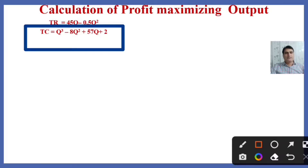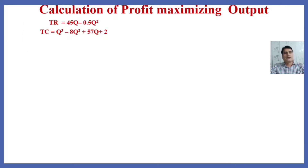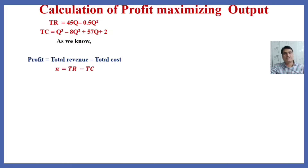Before finding the profit maximizing output, we have to find the profit function. As we know, the profit function equals total revenue minus total cost. We can rewrite this as: pi equals TR minus TC, where pi indicates profit, TR represents total revenue, and TC represents total cost.